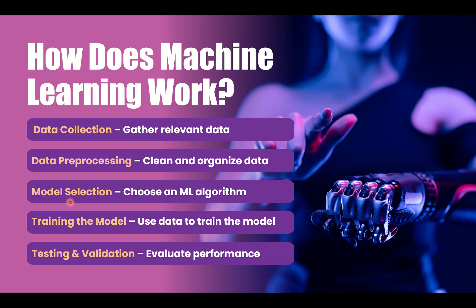In the third step, the model selection step, we basically have to choose the machine learning algorithm so that we can train this algorithm or model. In the fourth step, we have to train this model. So you collected the data, you cleaned the data, you chose the required machine learning algorithm, and then you train the model with the training data.